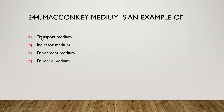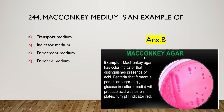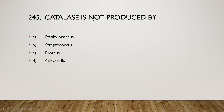Next question: MacConkey's medium is an example of transport medium, indicator medium, enrichment medium, or enriched medium? The right answer is option B — indicator medium. MacConkey agar has a color indicator that distinguishes acid-producing bacteria; bacteria that ferment a particular sugar such as glucose produce acid waste on the plates, turning the pH indicator red.